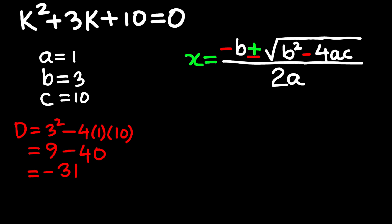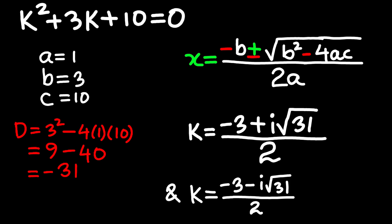That means we're stepping out of the real world and into the complex universe. Now let's talk about what that means. Since the discriminant is negative, we introduce i, the imaginary unit. With it, the remaining solutions are K equals negative 3 plus i times the square root of 31 all over 2, and K equals negative 3 minus i times the square root of 31 all over 2.